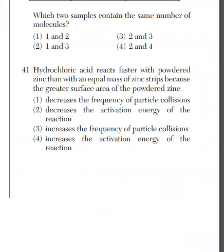We have 10 more questions to go in part B1 of the August 2019 regions exam. And here we are at question 41. Hydrochloric acid reacts faster with powdered zinc than an equal mass of zinc strips. And it says because the surface area of the powdered zinc, obviously it's going to increase the number of particle collisions because they're going to have more contact with one another. That's your answer.